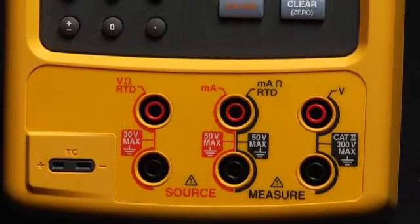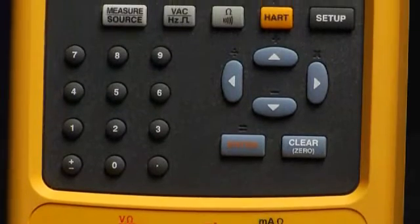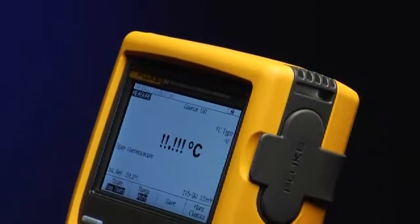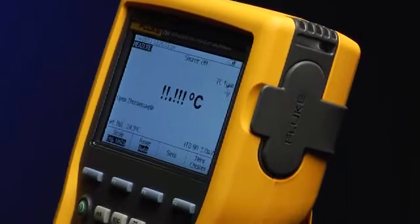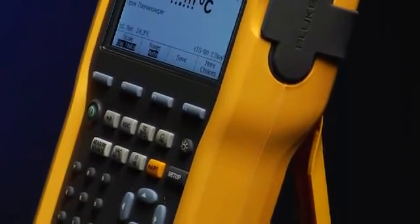Fluke documenting calibrators have always had best-in-class accuracy and usability with functions and features designed for instrumentation professionals. These calibrators are designed for ruggedness and demanding applications and are warranted for a full three years, unlike the one-year warranty typical for other products like this.